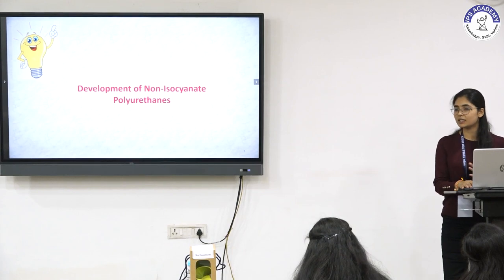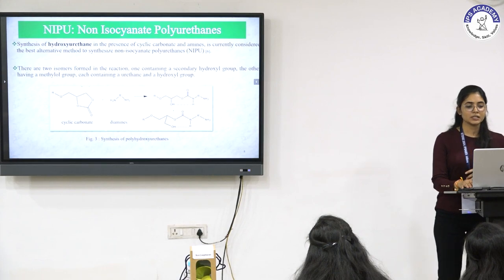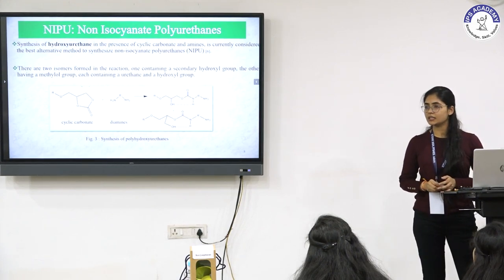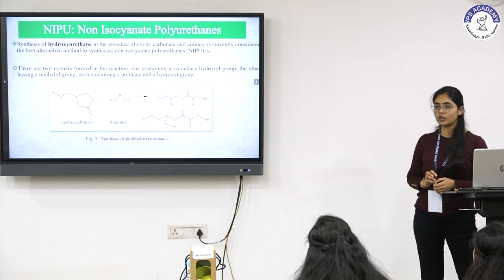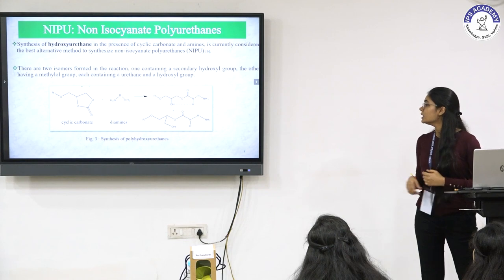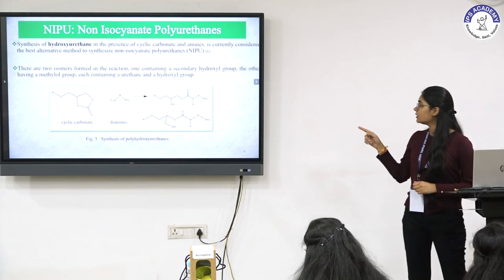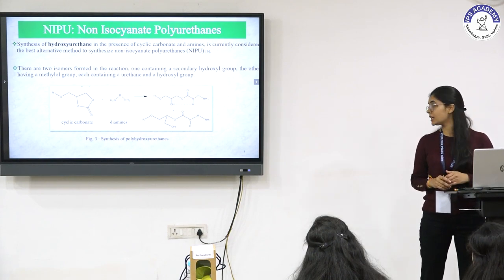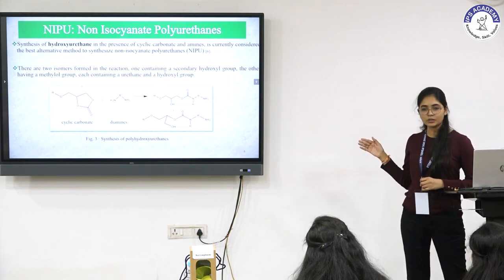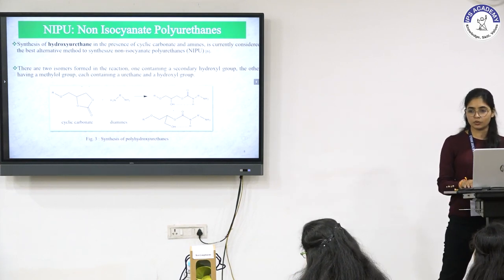This is how non-isocyanate polyurethanes came into existence. These non-isocyanate polyurethanes are often called hydroxy polyurethanes. For their synthesis, cyclic carbonates are treated with diamines, leading to the formation of two isomers. The two OH groups are capable of forming hydrogen bonding, leading to enhanced stability, as the presence of these OH groups increases the stability of these materials. They are also called hydroxyurethanes.